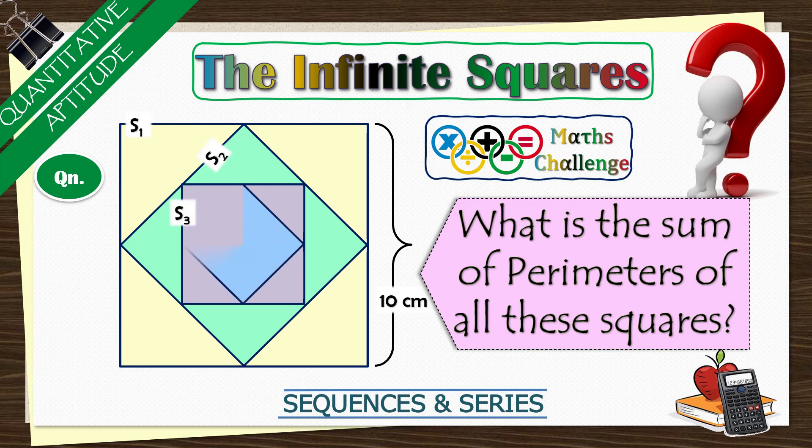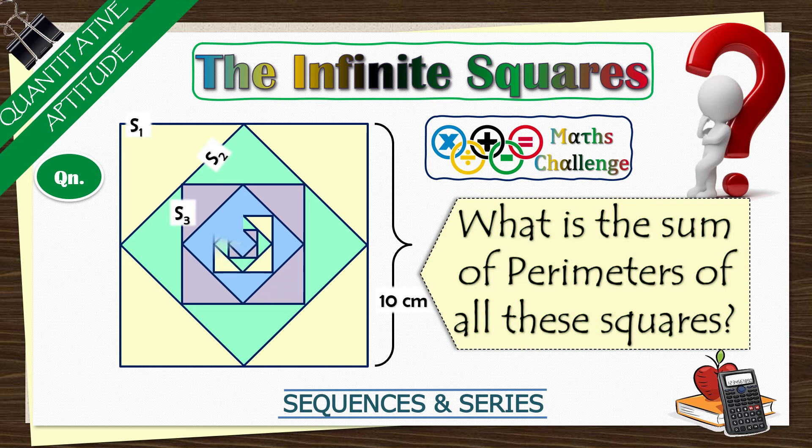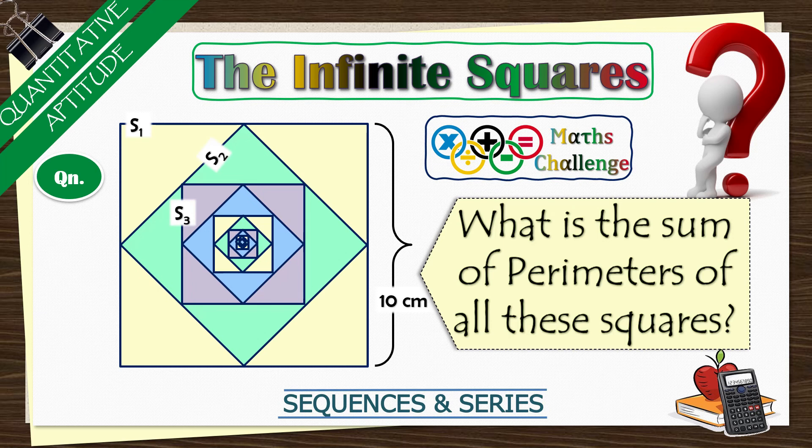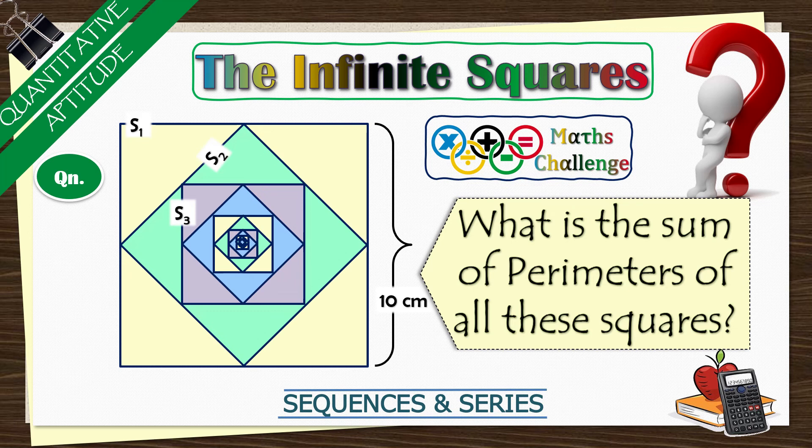Another square, S2, is formed by joining the midpoints of the adjacent sides of S1. This process is continued indefinitely. In this question, we have to find the sum of perimeters of all the squares such formed.